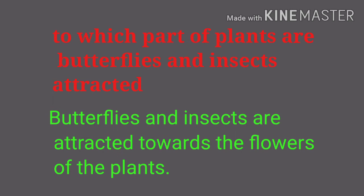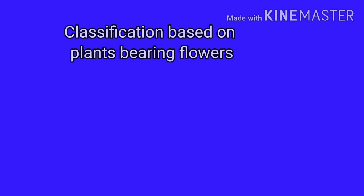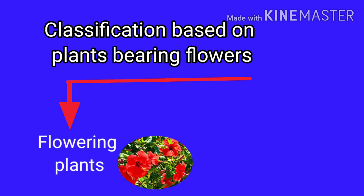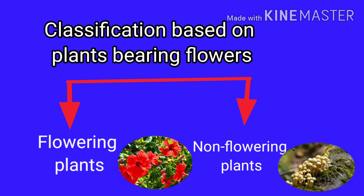Butterflies and insects are attracted towards the flowers of plants. Plants that bear flowers are called flowering plants, while plants that never bear flowers are called non-flowering plants. Non-flowering plants may not have organs like roots, stems, or leaves.